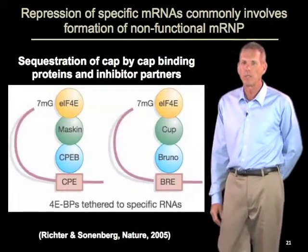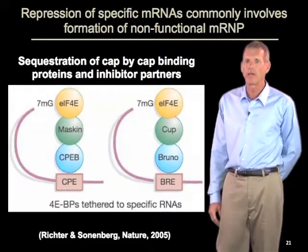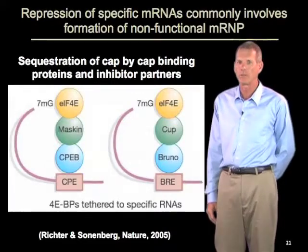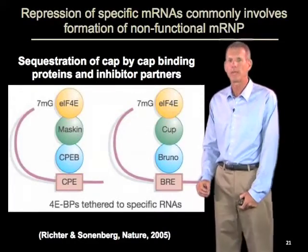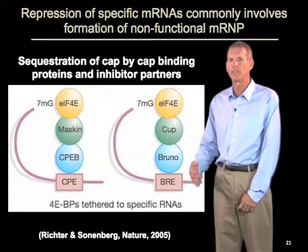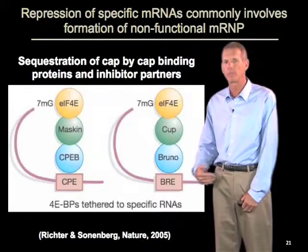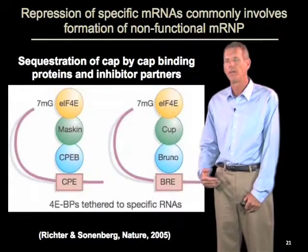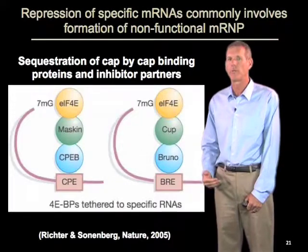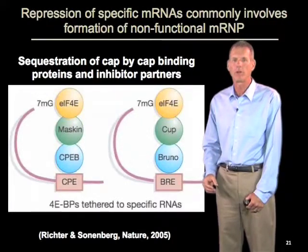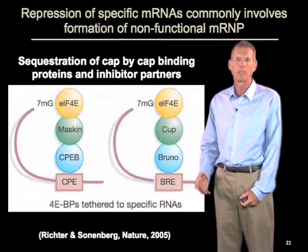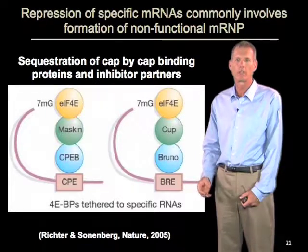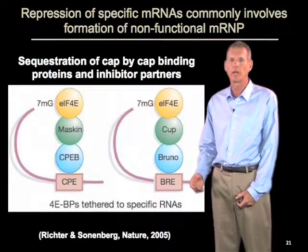Some mRNAs are not being translated all the time in eukaryotic cells — they are actually repressed, perhaps to be translated at a different time or a different place. That repression of mRNAs commonly involves the formation of what I would call a non-functional mRNA protein complex.